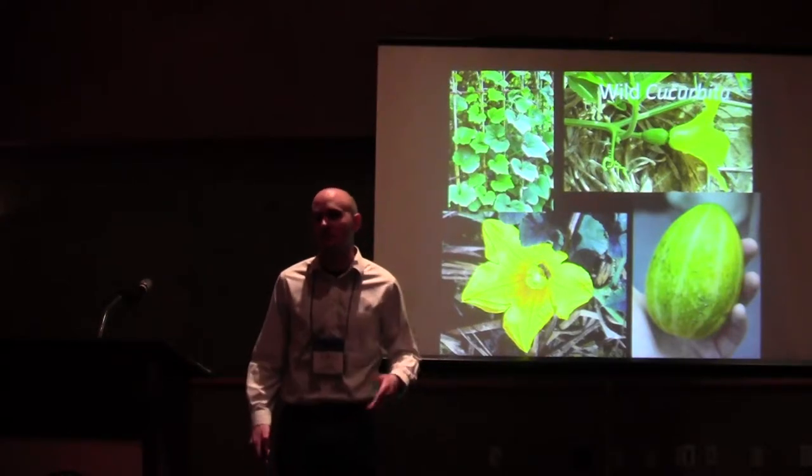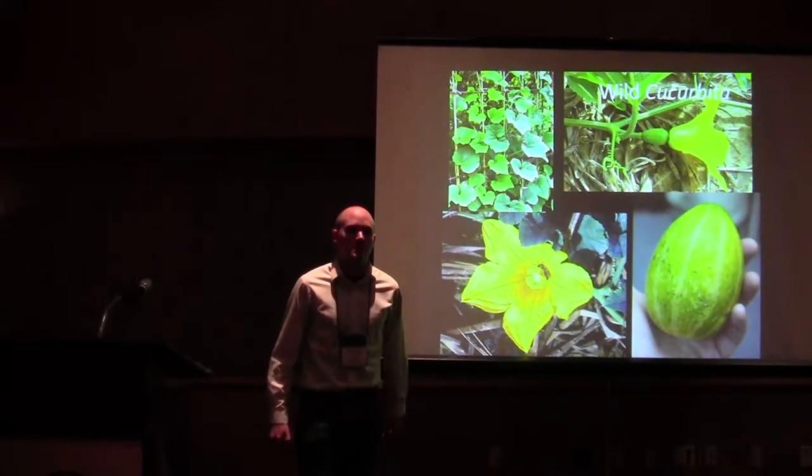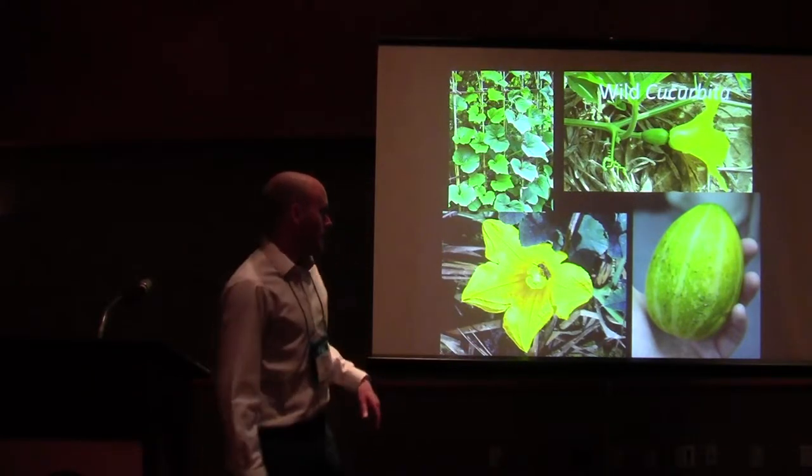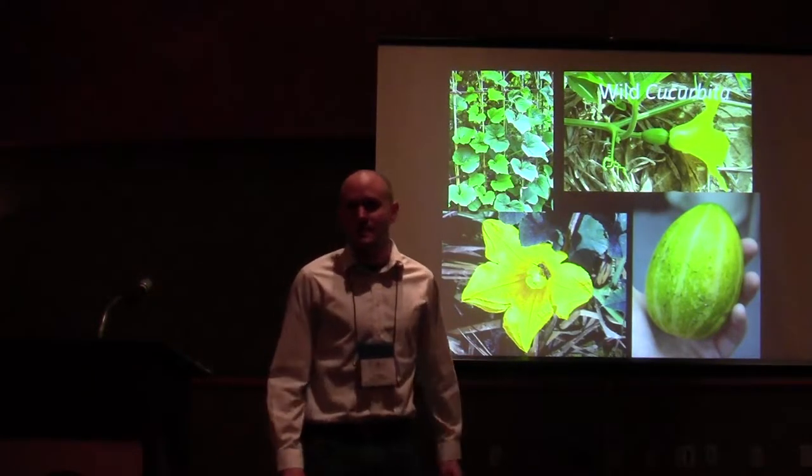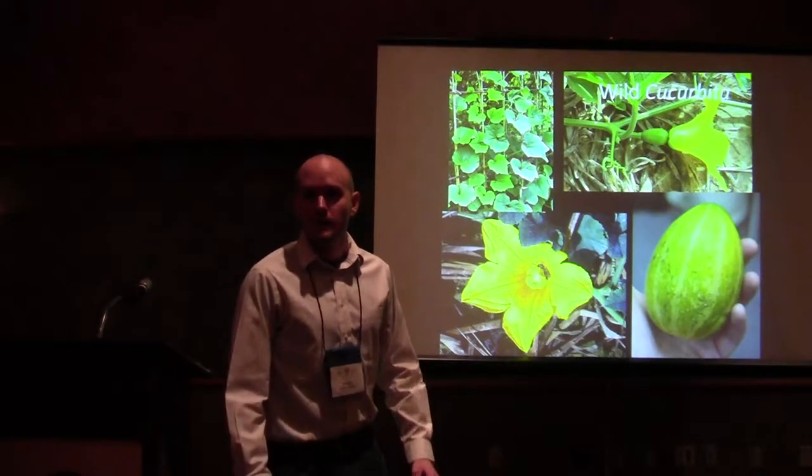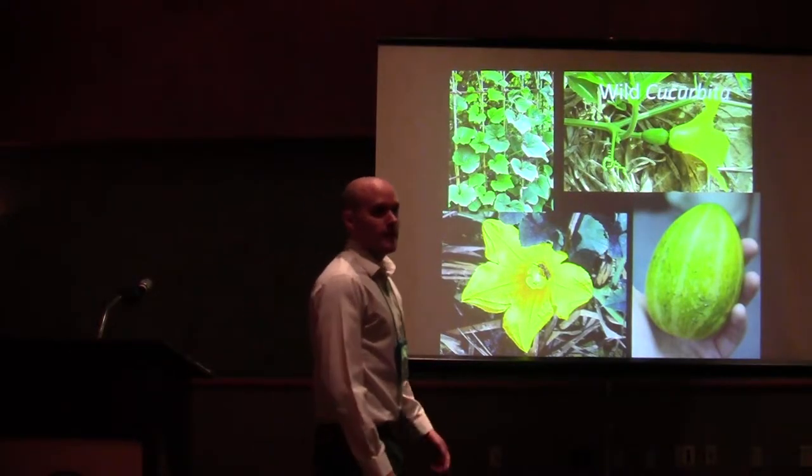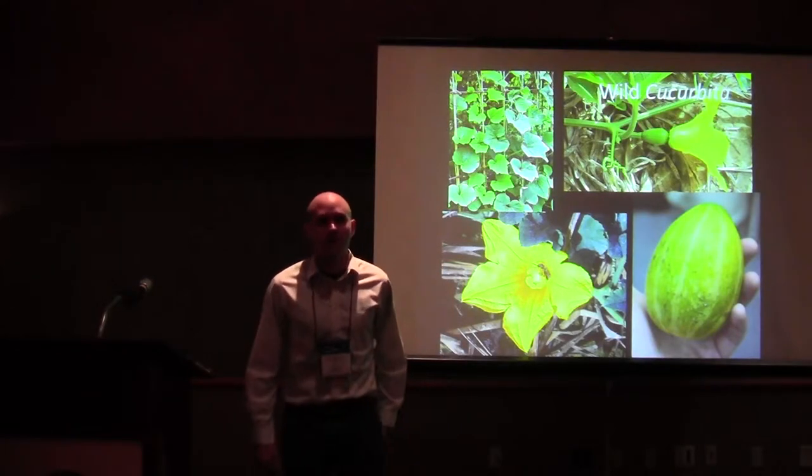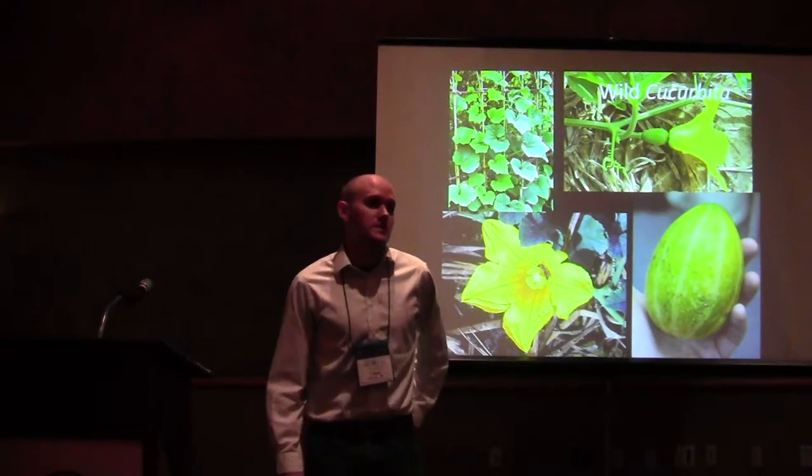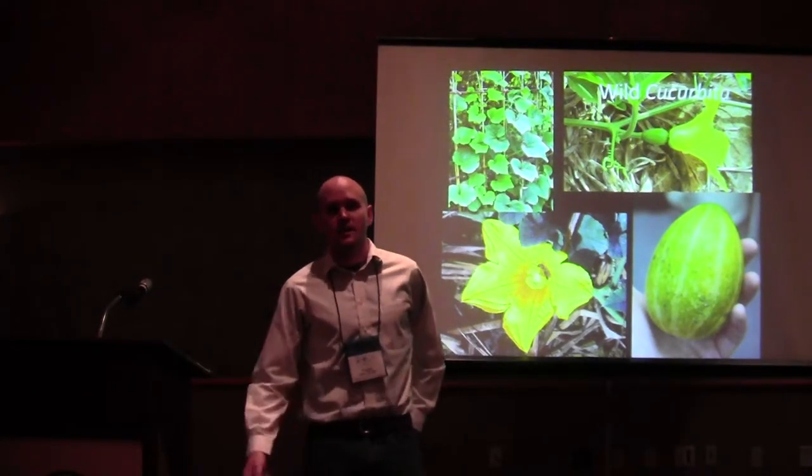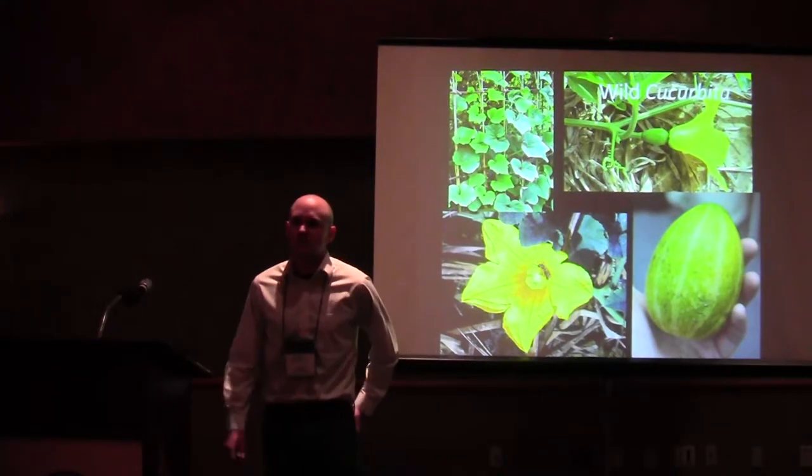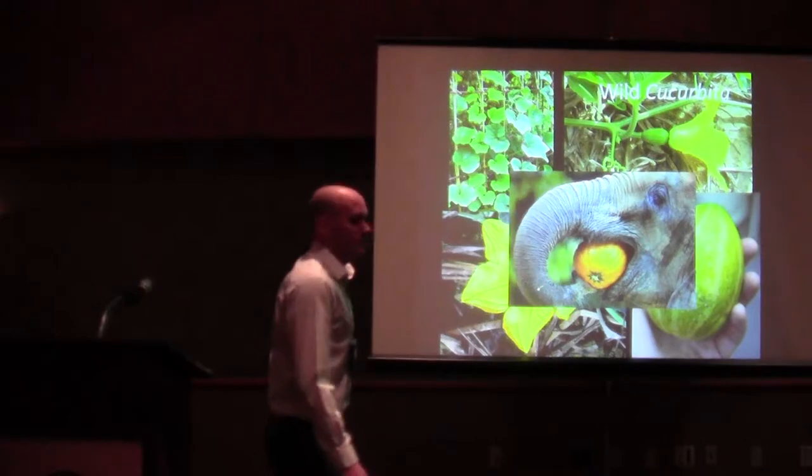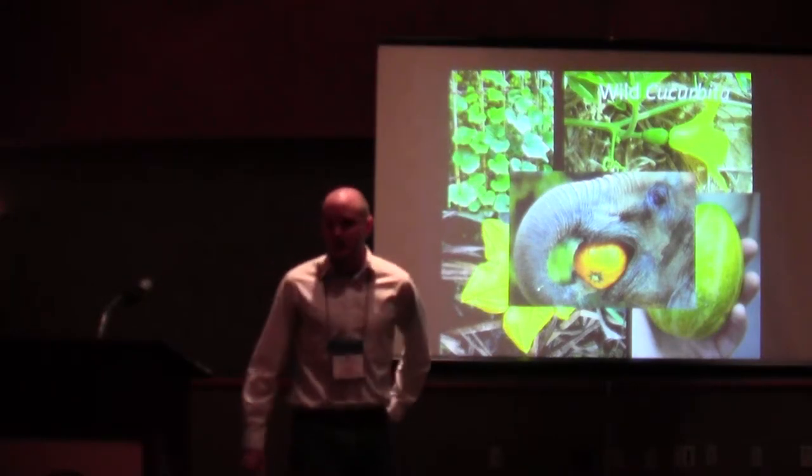This is wild cucurbita. There's 14 or so extant species spread throughout the Americas. It's anatomically a pepo, an indehiscent fruit that's quite tough and impermeable to water and most anything else. Cucurbita plants are well known for being very adept at long distance dispersal on oceanic currents and river systems. They're also extremely well adapted for dispersal by megafauna, by large mammals.